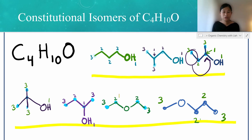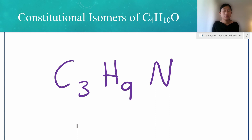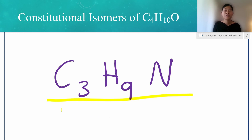How do you know when you have drawn all the constitutional isomers for a particular molecule? You know you're done if you keep drawing structures and they just have the same connectivity. So these are seven constitutional isomers of C4H10O. The way to get good at drawing constitutional isomers is just to keep practicing — keep doing these kinds of problems, find worksheets and videos online. As a bonus, I've provided you with a formula to find constitutional isomers of C3H9N. Thank you so much for watching and I'll see you next time.